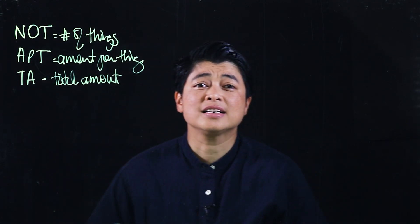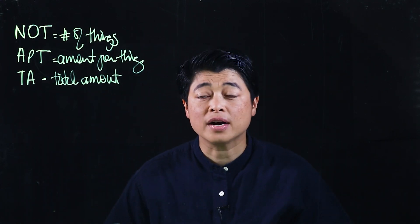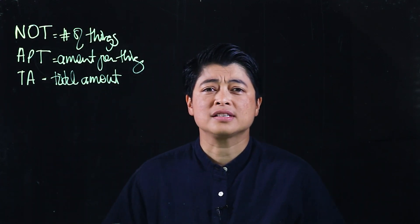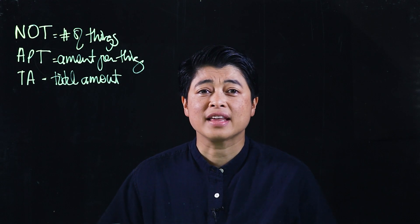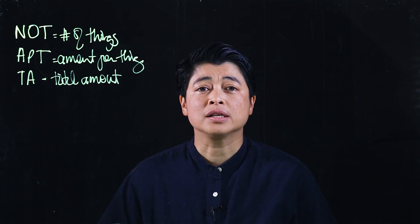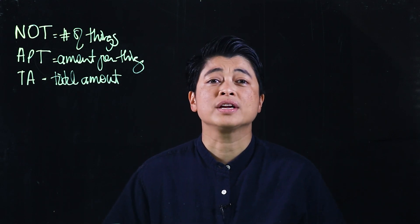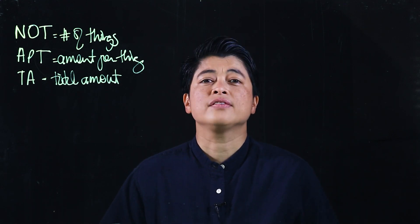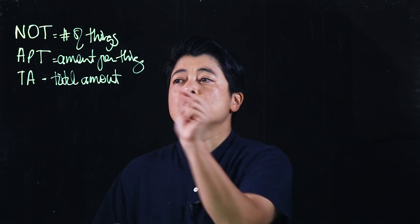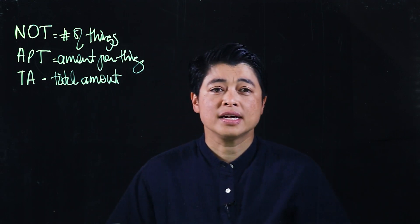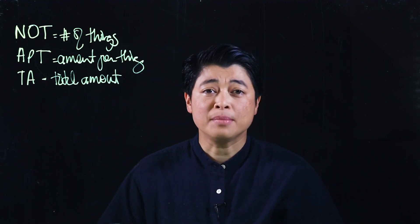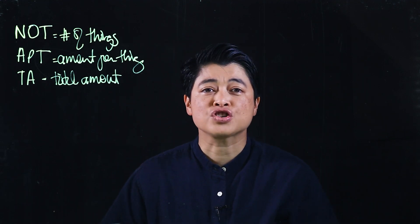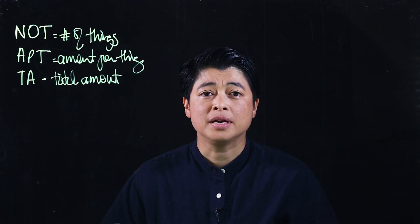If the total amount is the question mark, that makes it a multiplication question. However, if the question mark is the amount per thing, then that makes it a division problem.